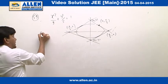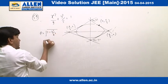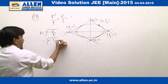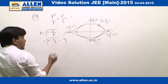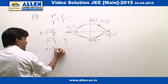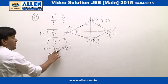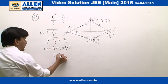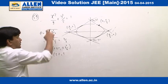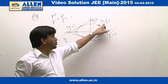The eccentricity is given by the formula √(1 - b²/a²) = √(1 - 5/9) = √(4/9) = 2/3. The coordinates of the latus rectum are (±ae, ±b²/a). With a=3 and e=2/3, ae=2. And b²/a = 5/3. So the latus rectum coordinates are (±2, ±5/3).